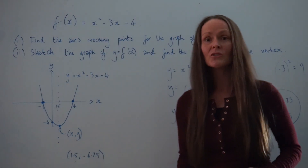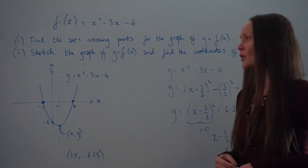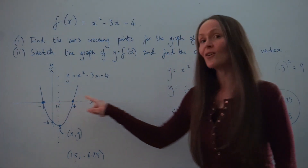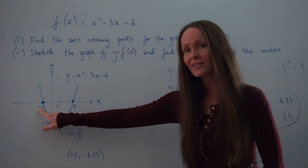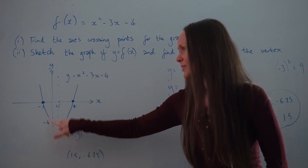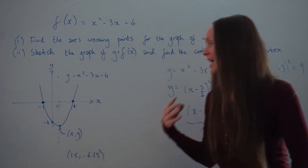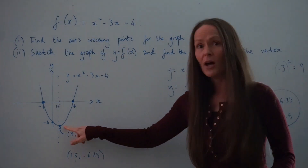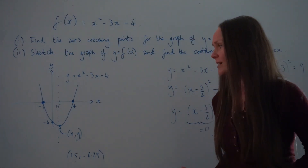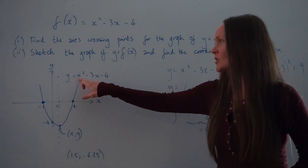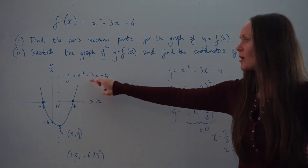Remember, if you're asked to do a sketch in your exam, make sure you indicate all the important points on your graph. You don't have to label every number along the axes, but do show where the graph crosses the y-axis, where it crosses the x-axis, and if possible, the coordinates of the minimum or maximum point. Also make sure you get the general shape of the curve correct — in this question it's a parabola with positive x², so it's drawn opening upward.